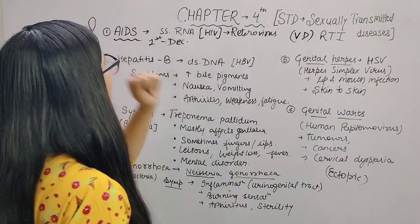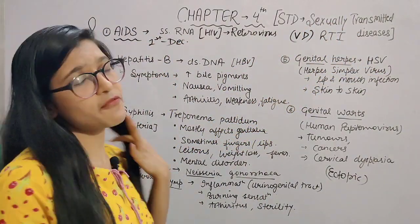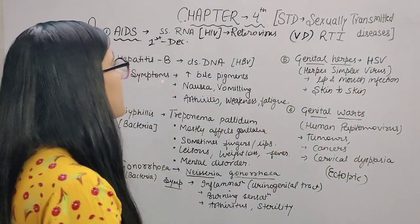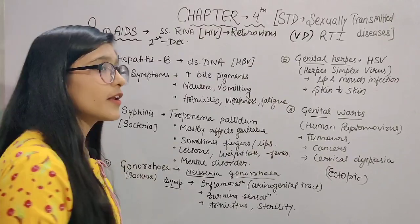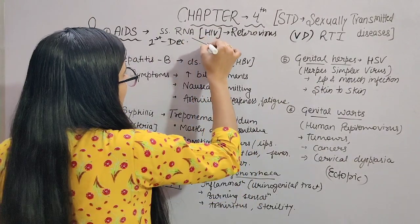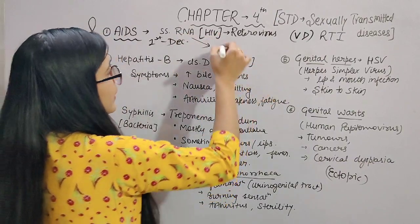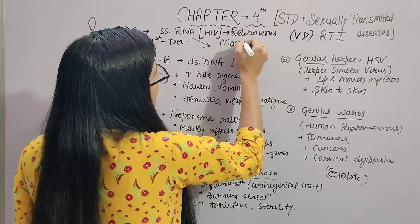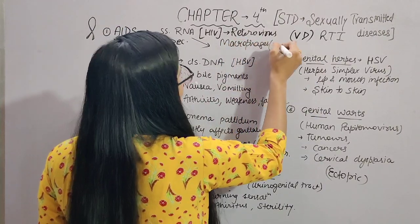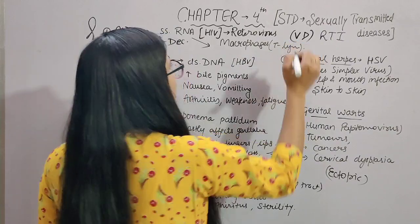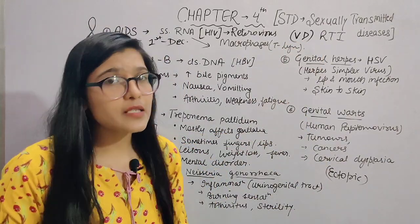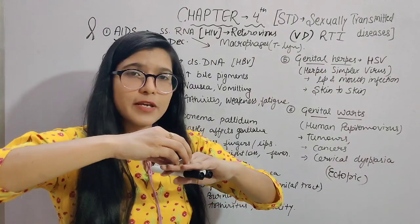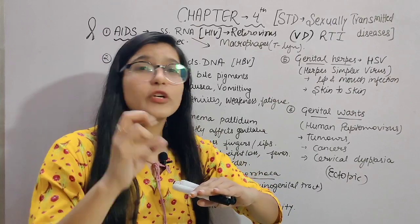Now specifically about AIDS: HIV, which belongs to the retrovirus family, has single-stranded RNA. HIV targets T-lymphocytes and macrophages in the human body. The genetic material in our body is DNA. But this virus's genetic material is RNA. Normally, DNA converts to RNA through transcription, and messenger RNA converts to protein through translation. But in HIV, the reverse happens — RNA converts to DNA, which is called reverse transcription. That is why this virus is called a retrovirus.